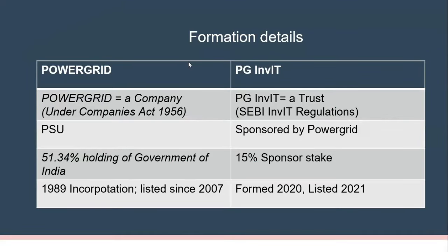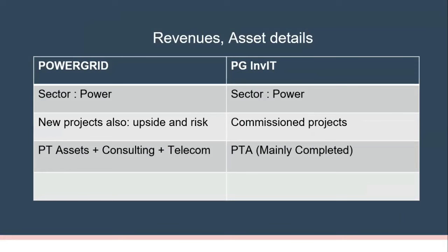Comparing formation details: Power Grid is a company under the Companies Act, while PG InvIT is a trust under SEBI InvIT regulations. Power Grid is a PSU with 51% government holding; PG InvIT is sponsored by Power Grid Corporation with about 50% stake. Power Grid Corporation was incorporated in 1989 and listed in 2007; PG InvIT was formed in 2020 and listed in 2021.